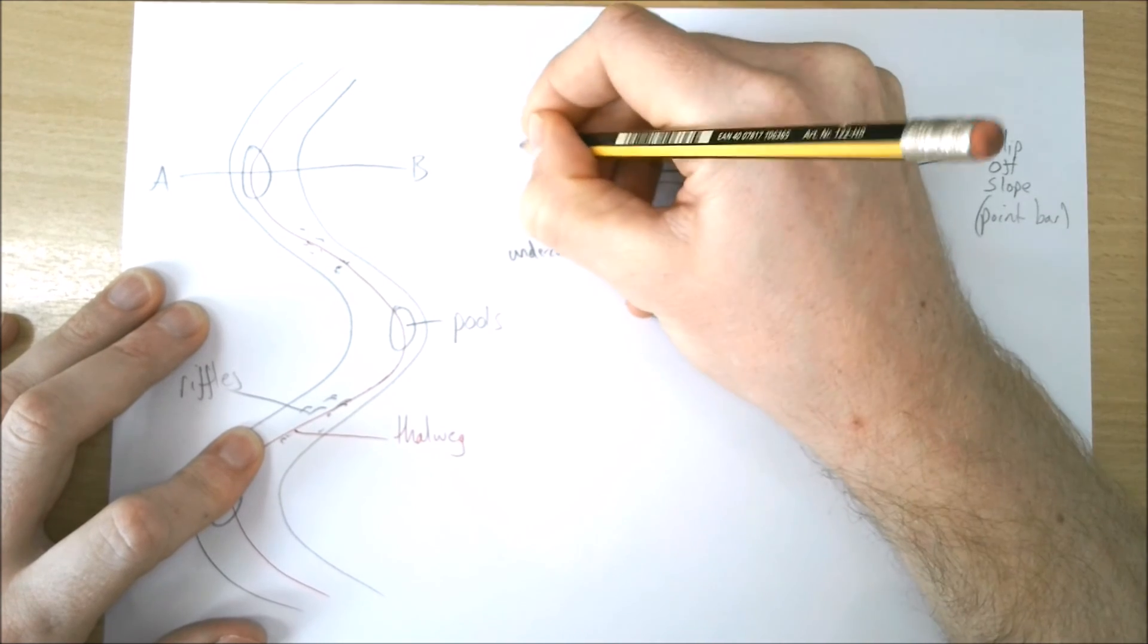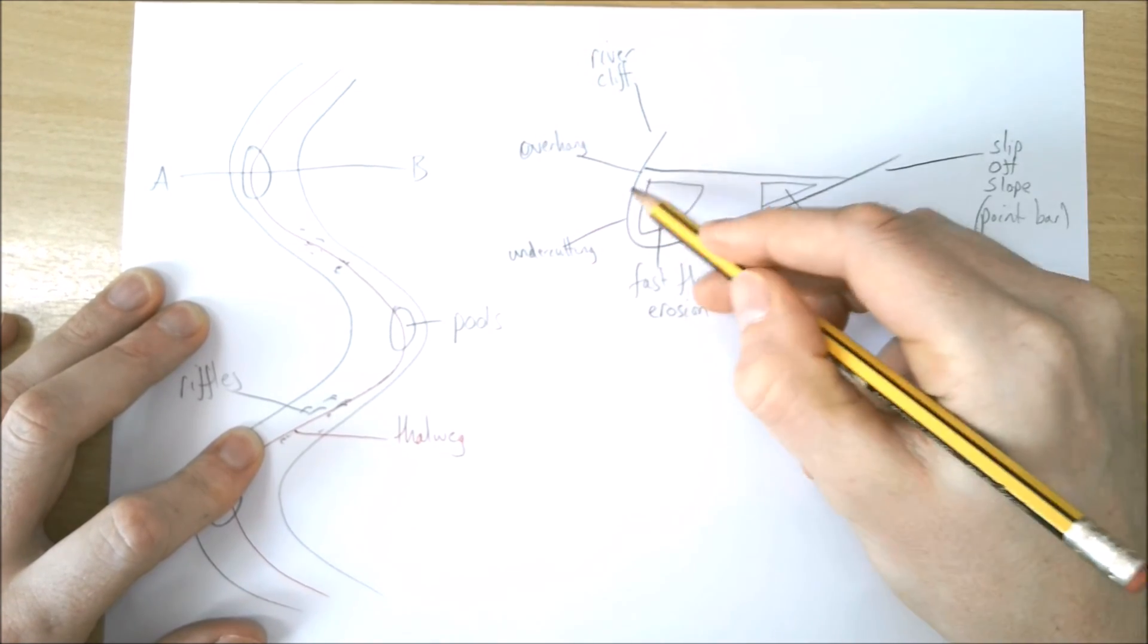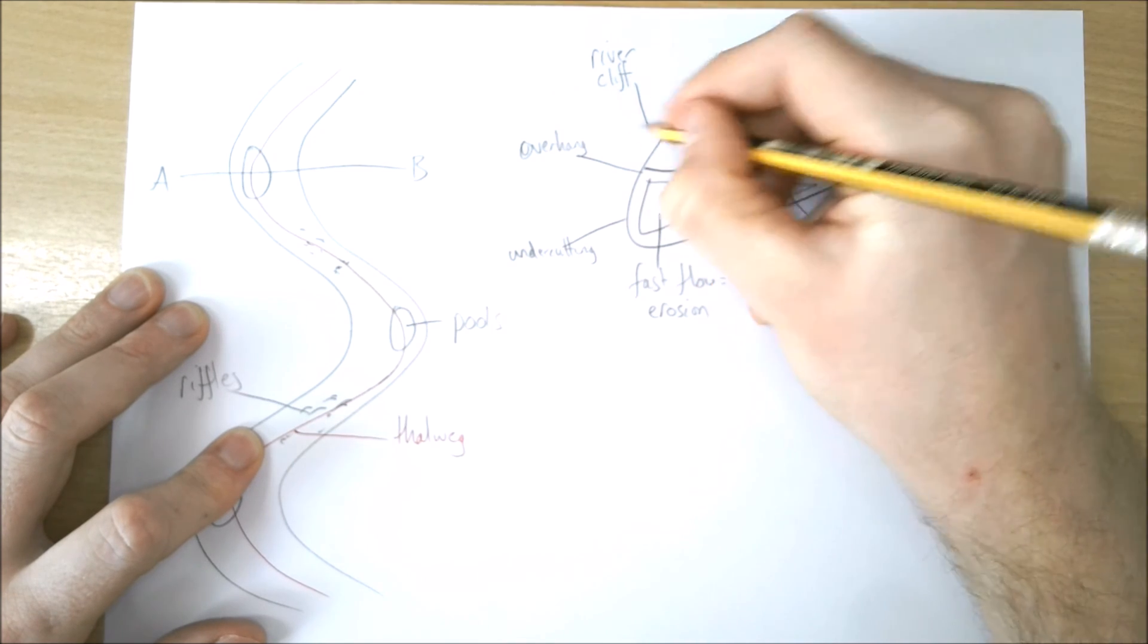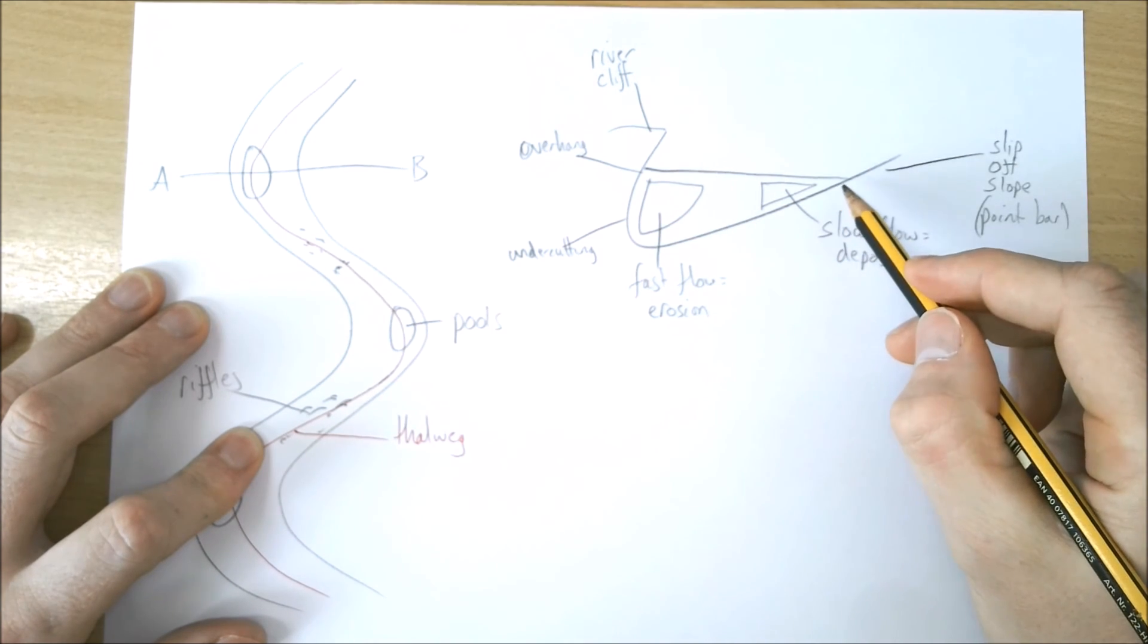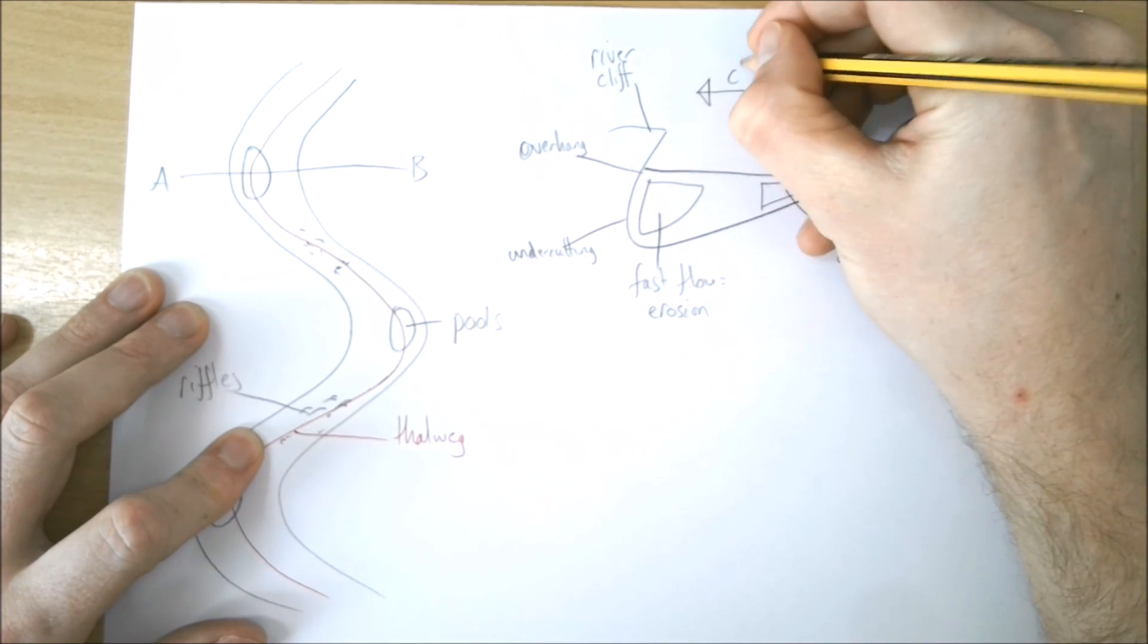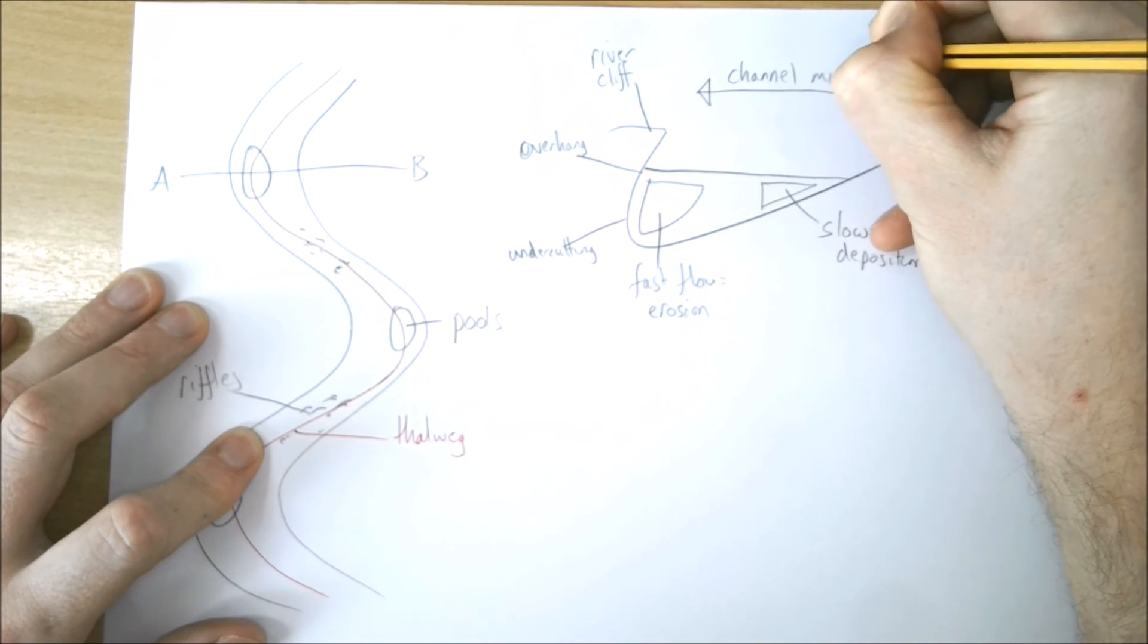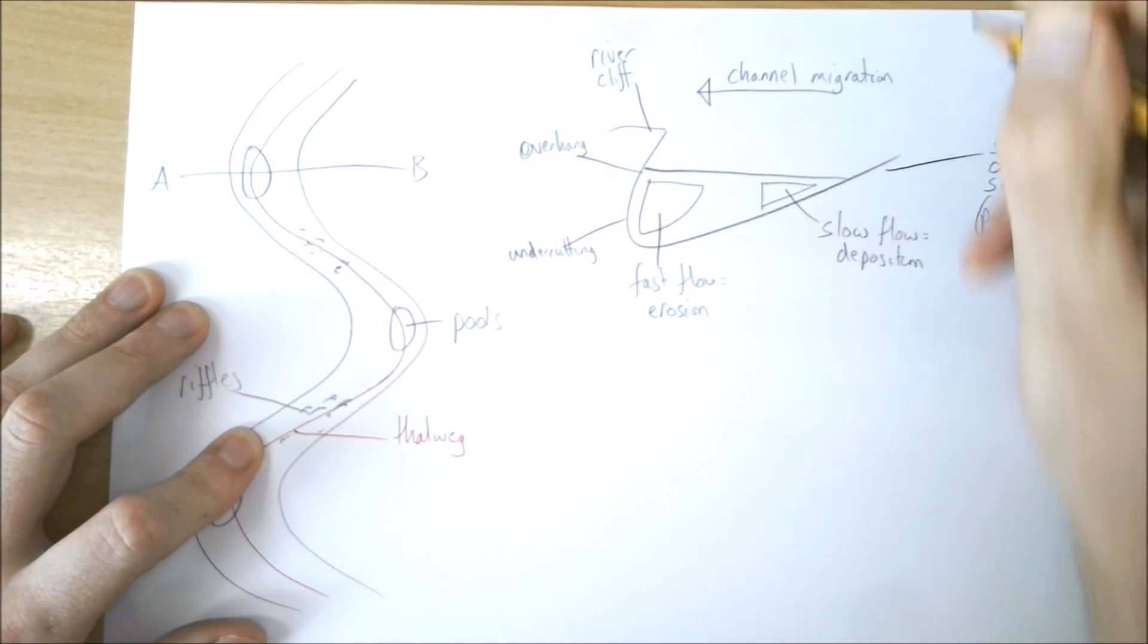That leads to an overhang, and over time that river cliff will collapse. The river channel will slowly migrate—in this example, to the left. So we can add in the label 'channel migration.'